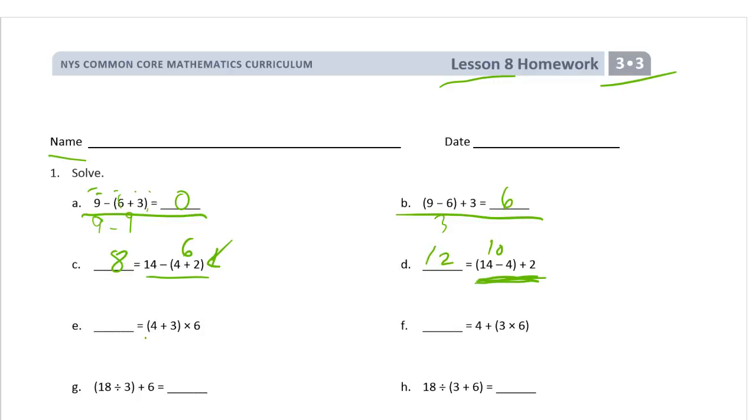And here we have 4 plus 3 times 6. But the parentheses are different. So here's 4 plus 3. That's 7. So 7 times 6 is 42. Over here you've got 3 times 6 first, because that's in the parentheses. So that would be 18. And you have 4 plus 18, which is 22. Much different.